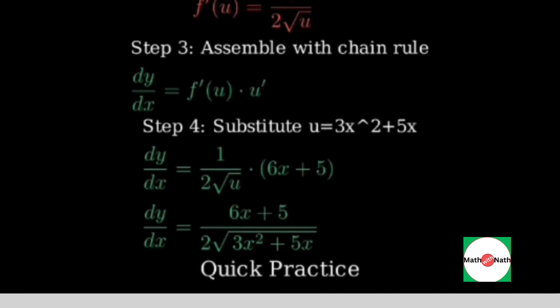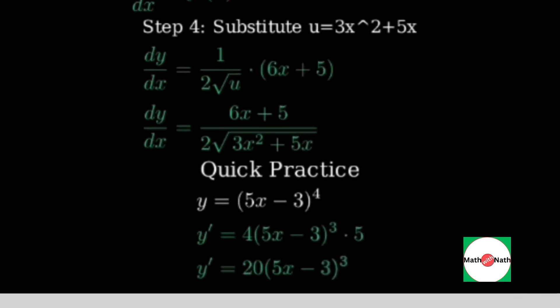Here are two quick examples to reinforce the pattern. Example one, y equals open parenthesis 5x minus 3, close parenthesis to the fourth. The derivative is 4 times 5x minus 3 to the third, times the derivative of the inside, which is 5. That simplifies to 20 times 5x minus 3 to the third.